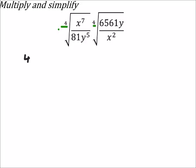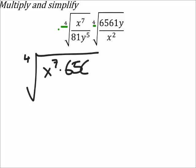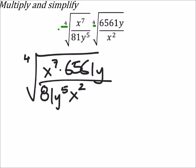So I end up with the fourth root of x to the power of 7 times 6561y, and we're going to divide this by 81y to the fifth times x squared.